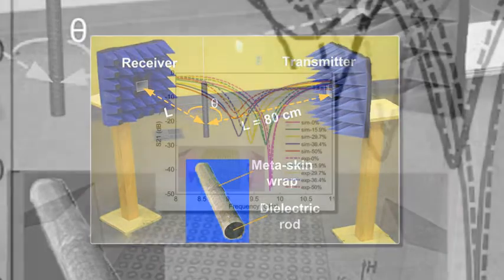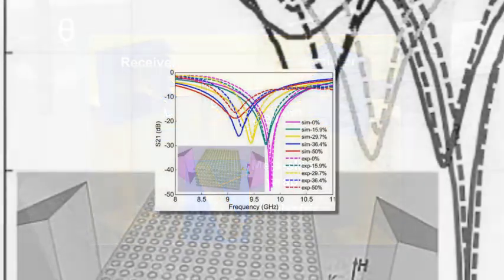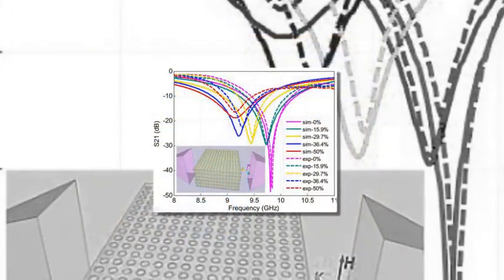Stretching the material changes the size of the liquid metal rings inside, so changes the frequency the device suppresses.